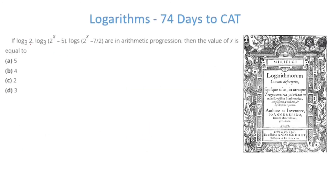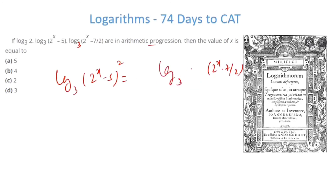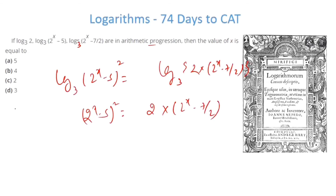Next problem: log base 3 of 2, log base 3 of (2^x − 5), and log base 3 of (2^x − 7/2) are in AP. For AP, twice the middle term equals the sum of the first and third: 2 · log base 3 of (2^x − 5) = log base 3 of 2 + log base 3 of (2^x − 7/2). The right side becomes log base 3 of [2 · (2^x − 7/2)].